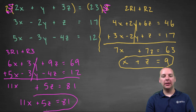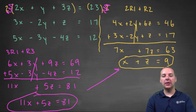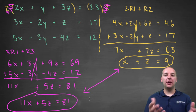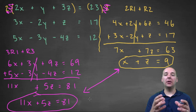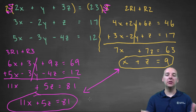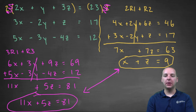So if you look at this new equation — 11x plus 5z equals 81 — and the equation we got just a minute ago — x plus z equals 9 — what just happened is we took a system with three equations and three unknowns and reduced it to a system with only two equations and two unknowns. It should be easier to solve. Let's take these two and solve this smaller system.